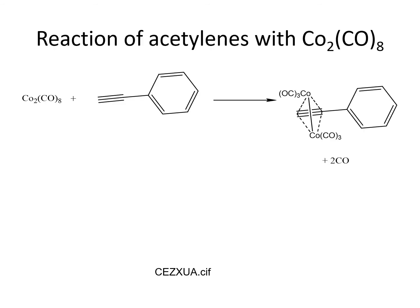A classic example is dicobalt octacarbonyl, where the two Co(0) units are connected by a Co–Co single bond. This allows each cobalt to interact with one of the two perpendicular pi bonds of an acetylene. One pi bond interacts with one cobalt, and the second pi bond — perpendicular to the first — interacts with the second cobalt. This makes acetylene a four-electron donor, donating two electrons to each cobalt atom.